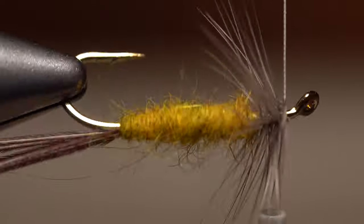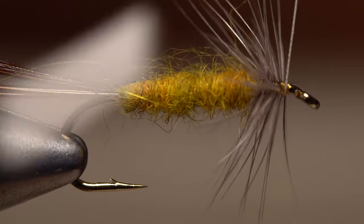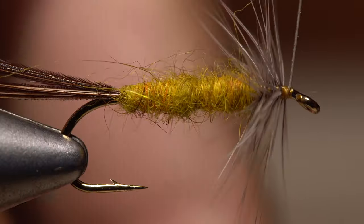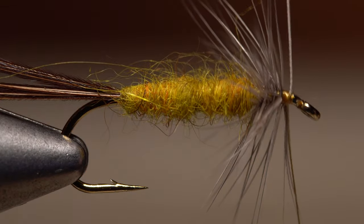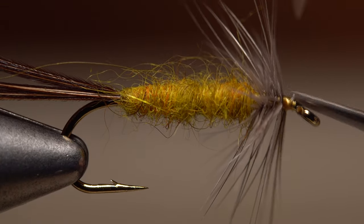Once you've made four to five turns, anchor the hackle stem with wraps of tying thread. Reach in with the very tips of your tying scissors and snip the excess butt end off close.